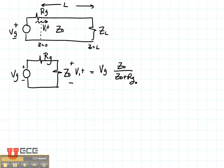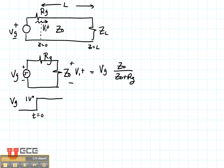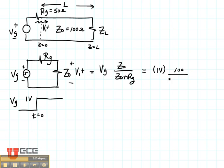V1 plus is simply going to be VG times Z naught over Z naught plus RG. Let's put some numbers to this. Suppose VG is a step voltage — at time T equals zero we turn on the switch, so it steps up to one volt and stays there. So VG is one volt, Z naught is 100 ohms, and RG is 50 ohms. Then we have 100 divided by 150, which means one third of a volt gets onto the transmission line.